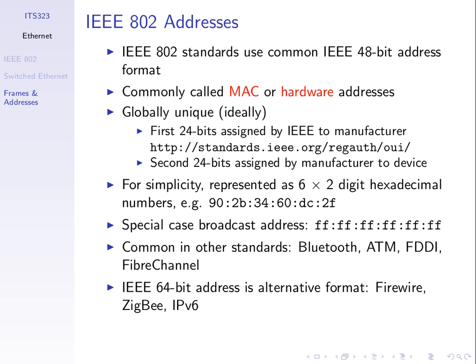All of our stations have a MAC address. When we want to send frames from one station to another, the frame includes the source and destination MAC address. These 48-bit MAC addresses are used not just in Ethernet but also in other technologies. There's a newer version using 64 bits, used in some technologies like Firewire, but that's a special case.